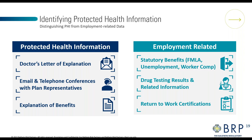Let's distinguish PHI from employment-related data. Examples of protected health information include a doctor's letter of explanation, an EOB, or an email or telephone conference between the plan representative and the employee. Employment-related information — such as FMLA paperwork, unemployment paperwork, workers' compensation, drug testing results, or a return-to-work certification — is not considered protected health information under the HIPAA rule, though other rules and regulations may protect that information.